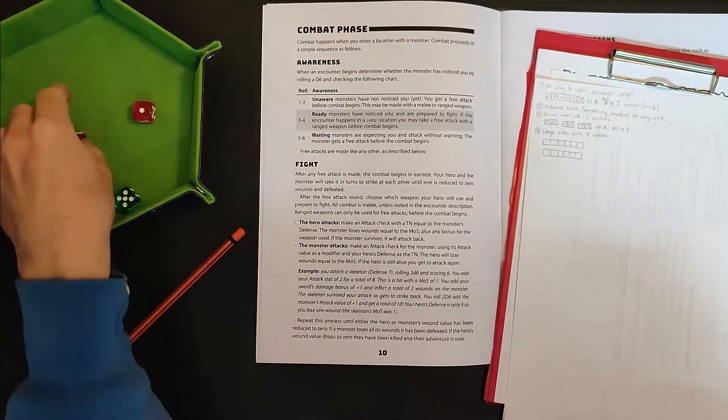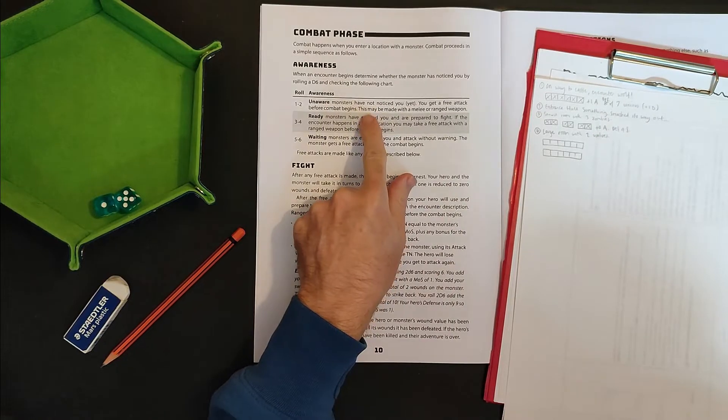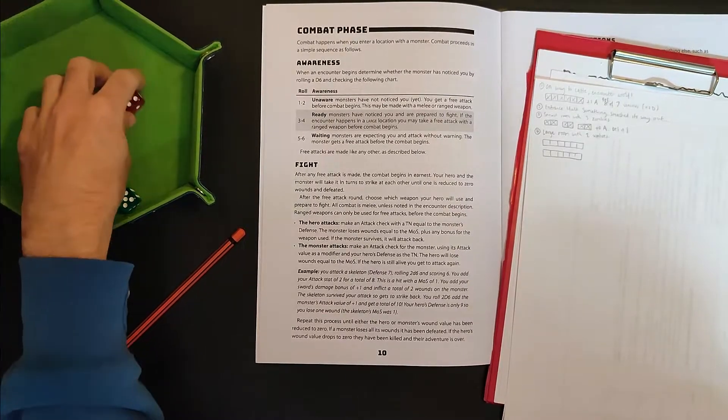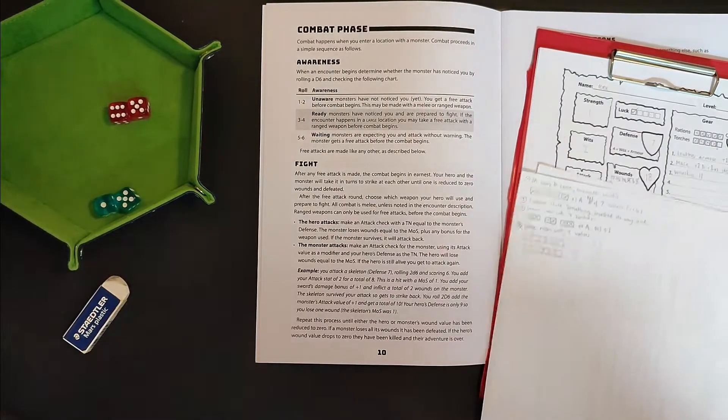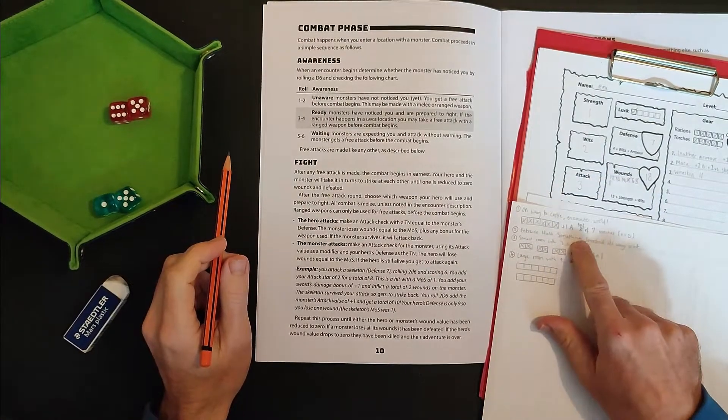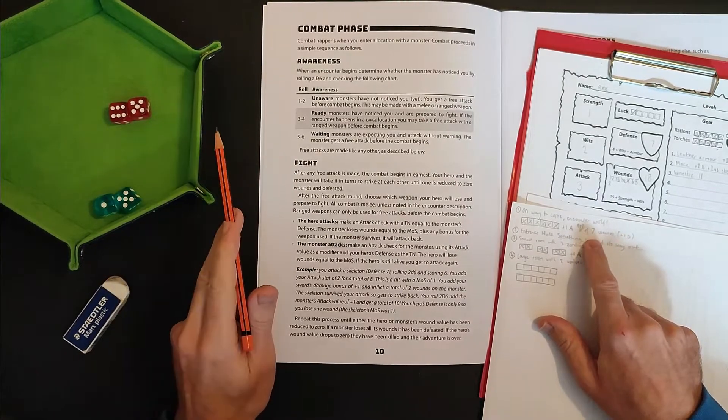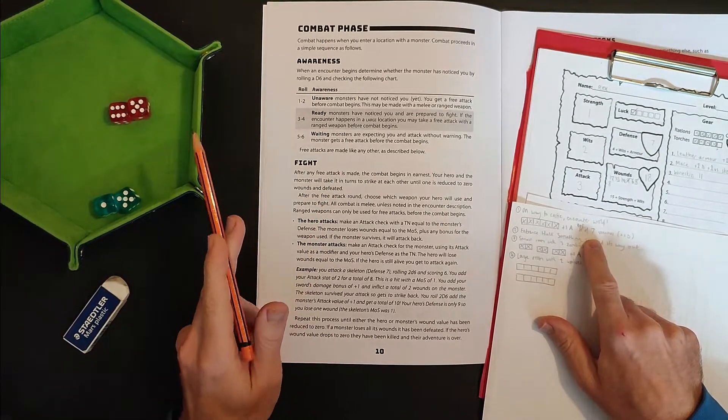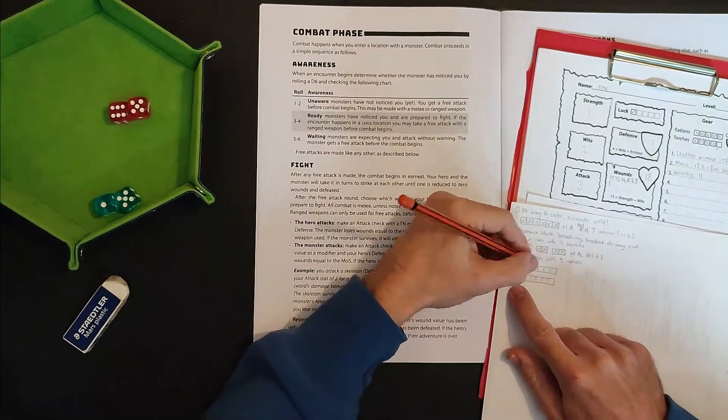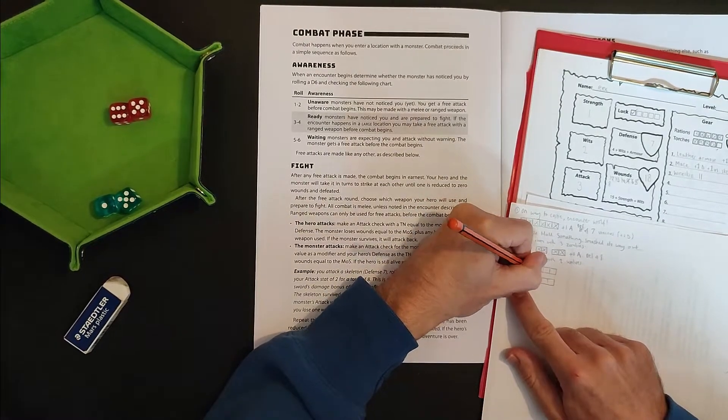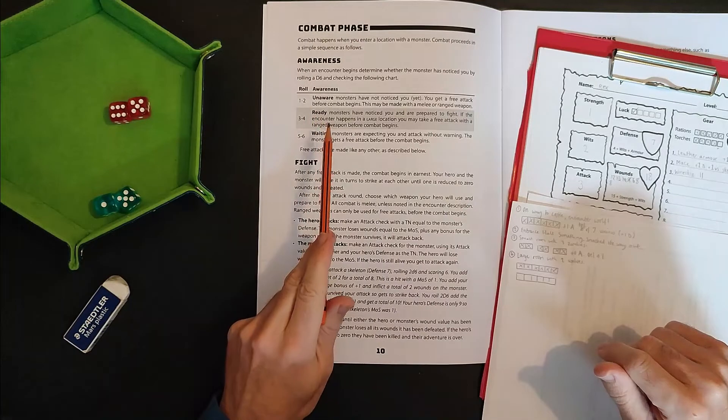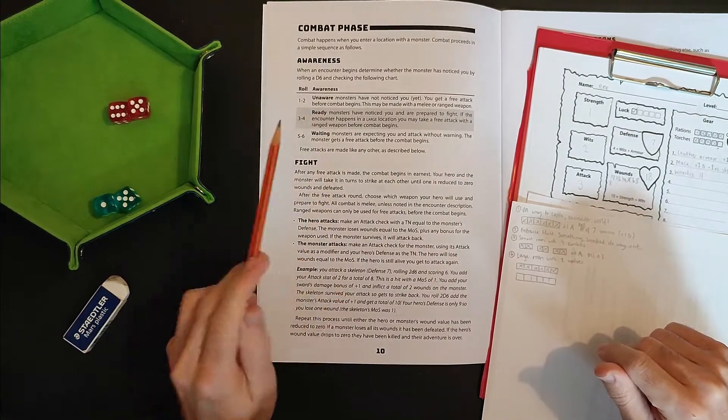One. Unaware. That's good. That means I get a free attack before the combat begins properly. So let's do it. Oh, that's good. So I have rolled 11, to which I add my attack: 12, 13, 14. The defense of a wolf is seven. So the difference between 14 and seven is seven. So my margin of success is seven, plus an additional one for my mace. So theoretically, I'd be doing eight points of damage, which quite comfortably finishes off that first wolf. Didn't even know what hit him.